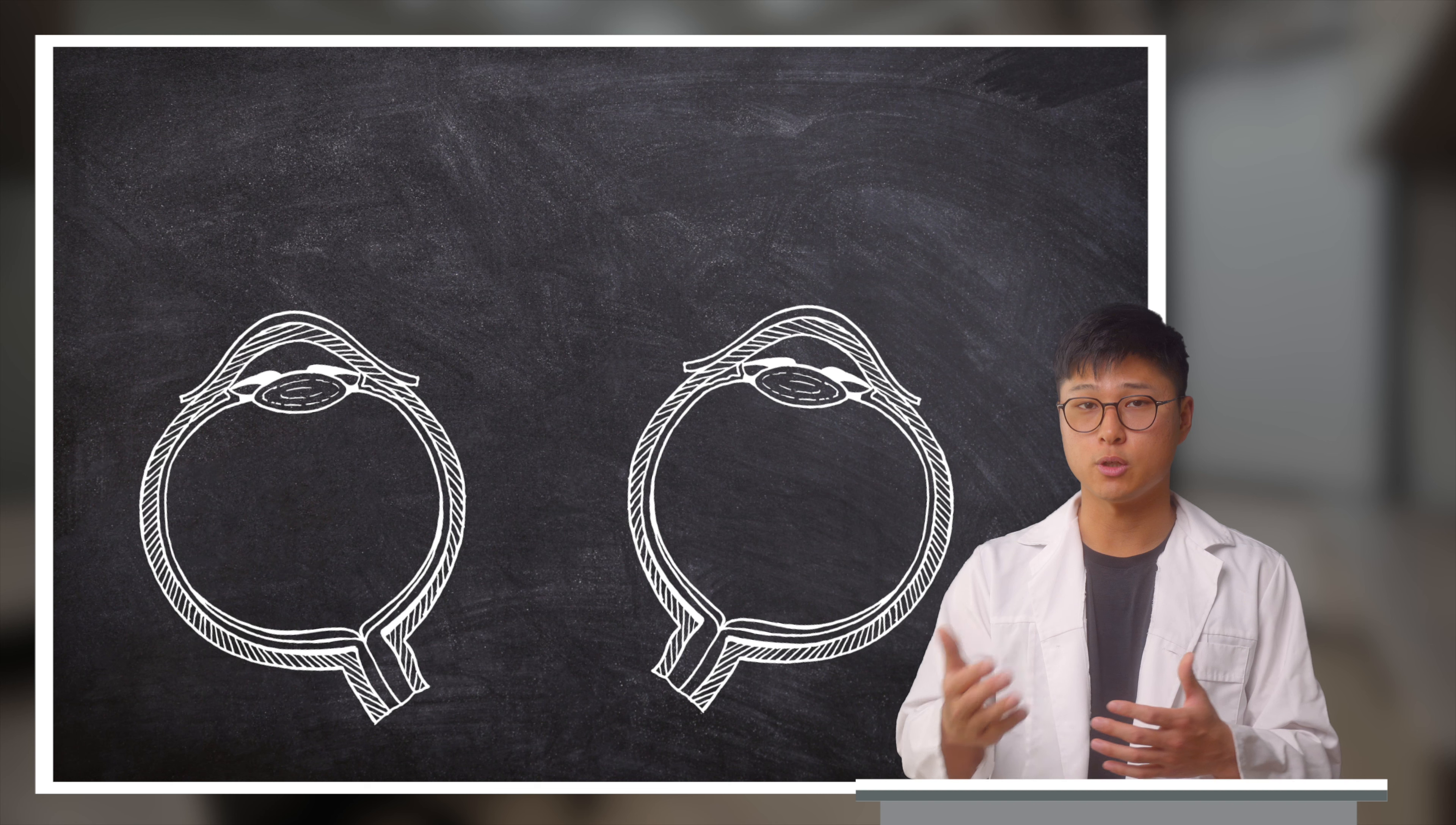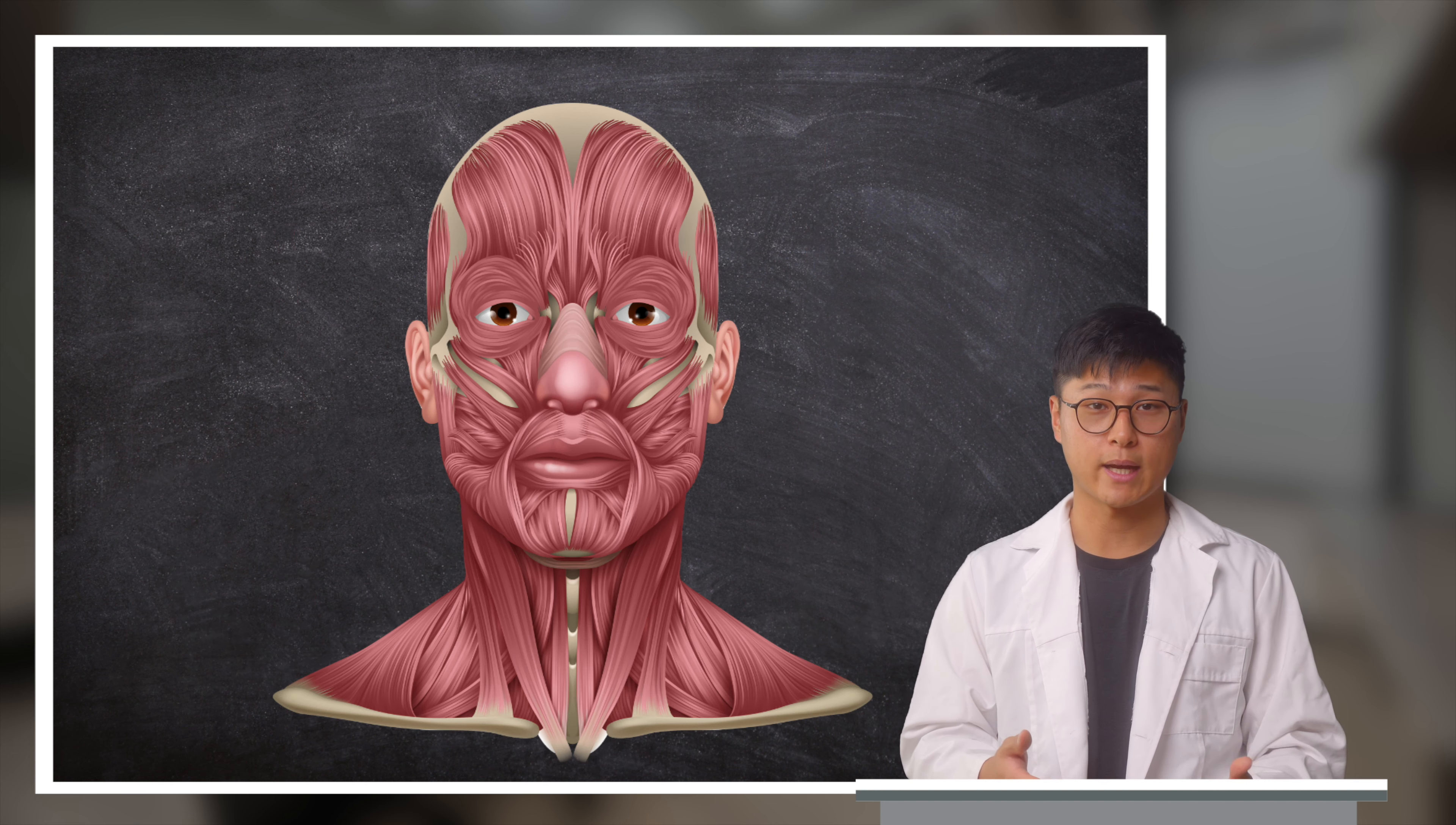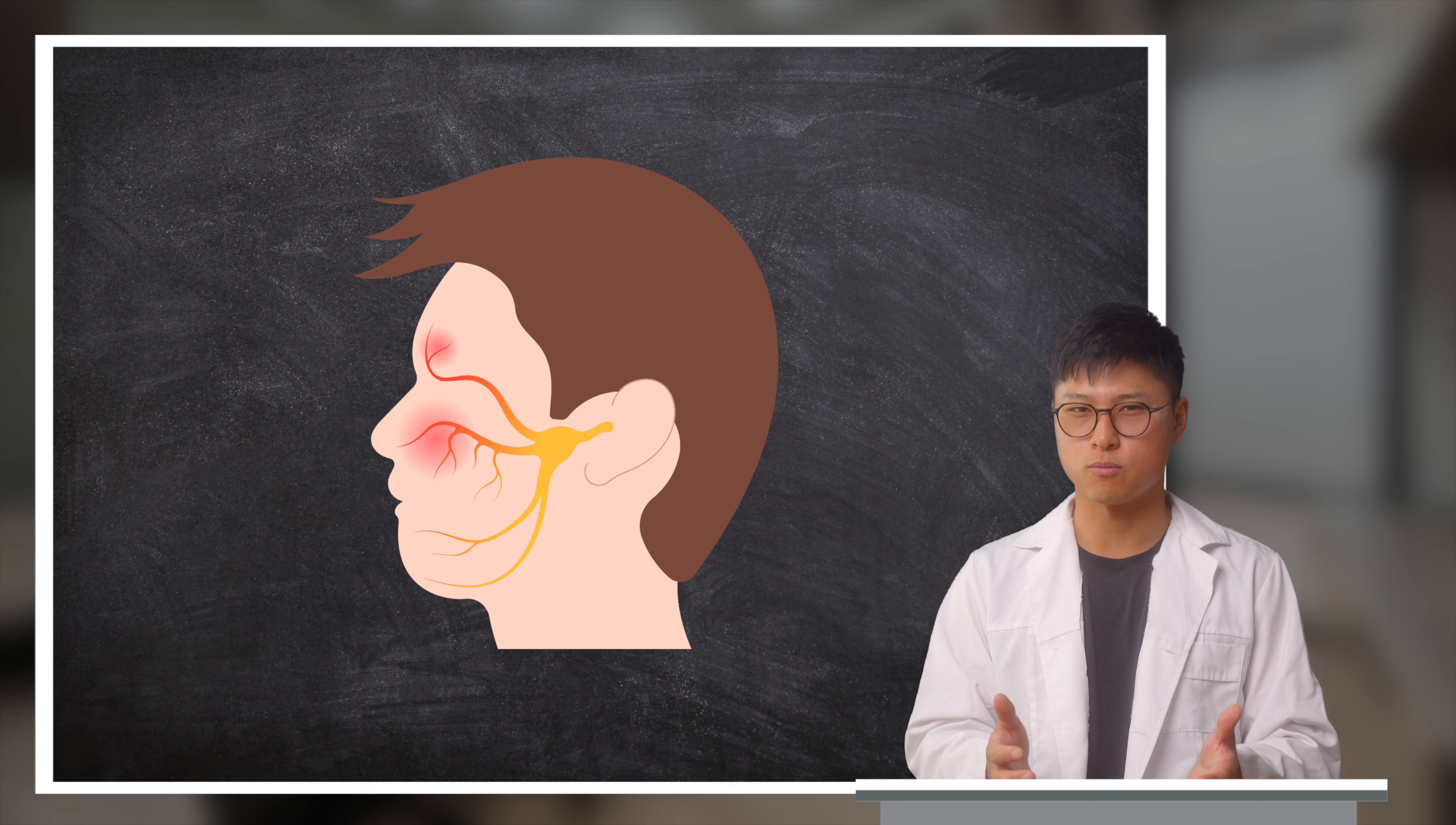Each set of eyes, including yours and mine, have what is known as phoria, which is our eyes' preferred state of alignment, a default setting if you will. And it stems from multiple factors such as your anatomy, potential weaknesses in a muscle, or even a compromised nerve signal from the brain.